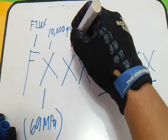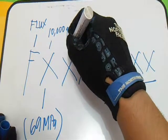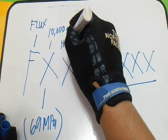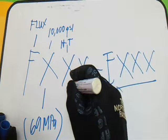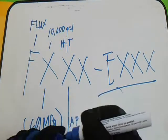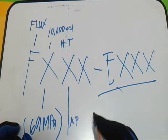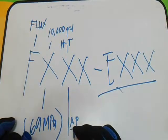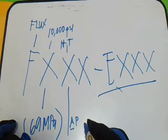The second X is designated for heat treatment condition. We have A and P here for heat treatment. A is for as-welded and P is for post-weld heat treated.